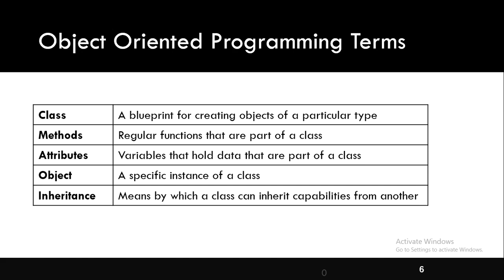Class is a blueprint for creating objects of a particular type. Methods are functions defined in a class. Attributes are variables which hold data that are part of a class. An object is a specific instance of a class. We will discuss inheritance in later videos.